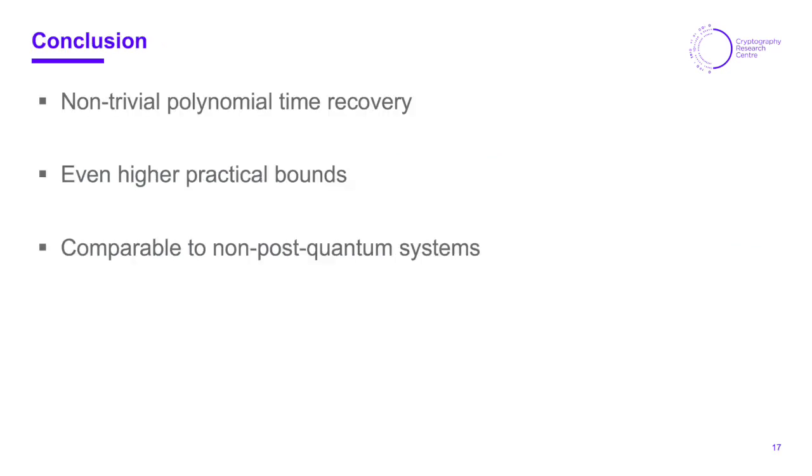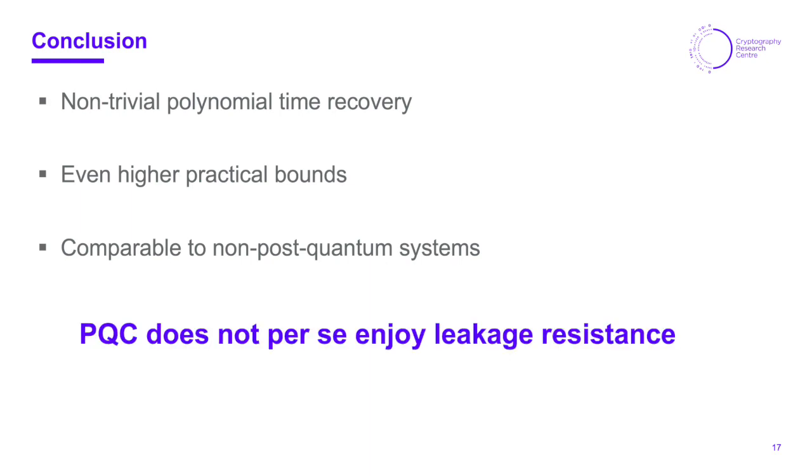Overall we give such non-trivial polynomial time key recovery attacks for all considered schemes meaning Rainbow, BIKE and NTRU. For all of them we give even higher practical bounds that stay below some threshold where we consider different bit complexities. Our results are comparable to non-post-quantum systems like the results known for RSA, so we can safely conclude that post-quantum candidates do not per se enjoy leakage resistance.